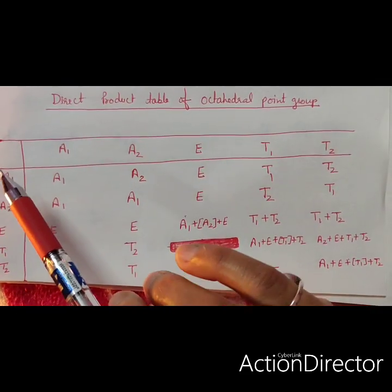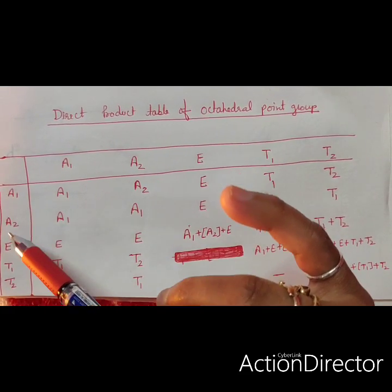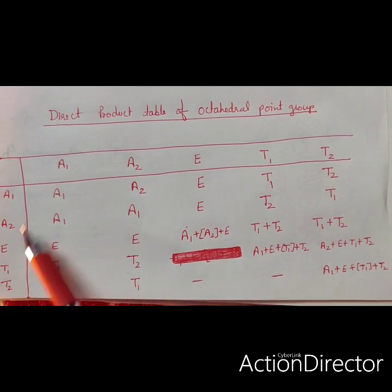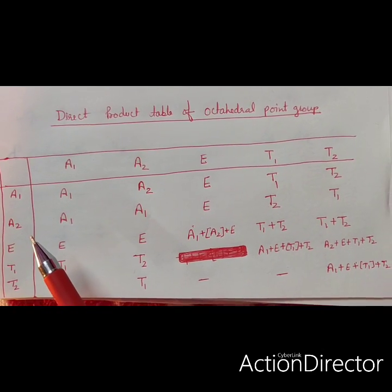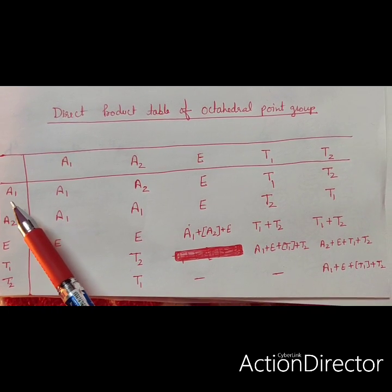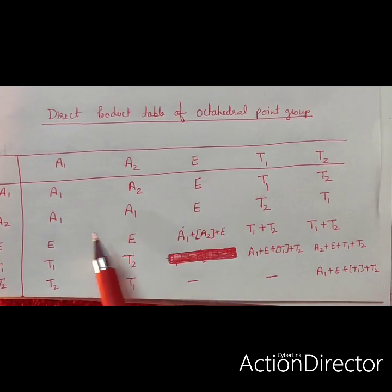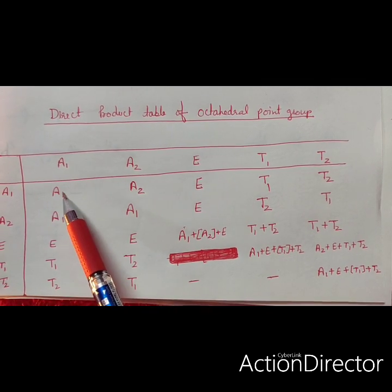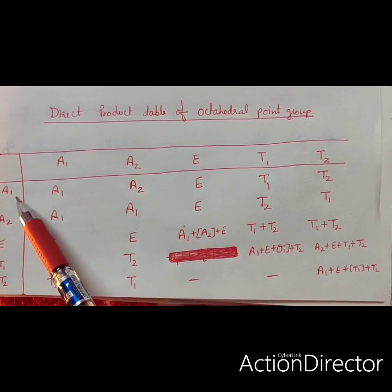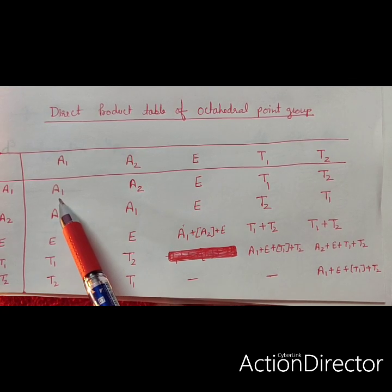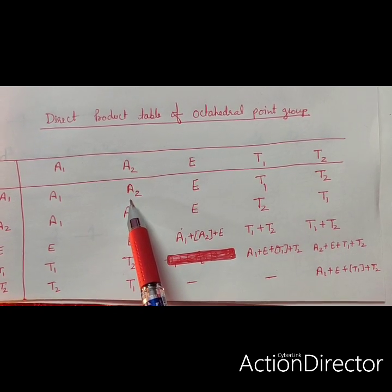This is the product table. We have formed a table containing the terms A₁, A₂, E, T₁, and T₂ in both the columns and rows — five terms in total. We will find out the products according to group theory. Each cell is the product of the corresponding row and column terms. If A₁ is multiplied with A₁ it produces A₁, and A₁ crossed with A₂ generates A₂.